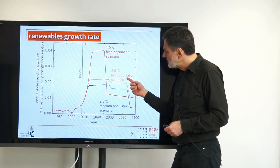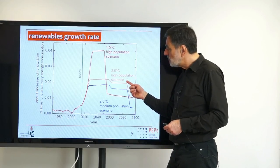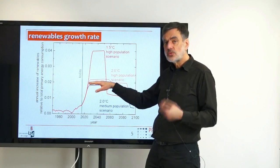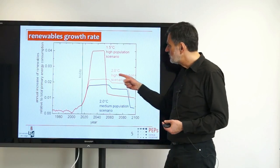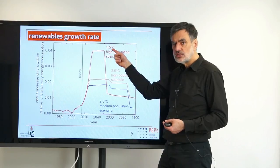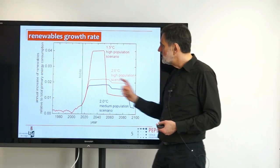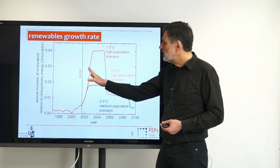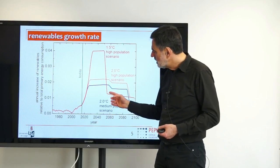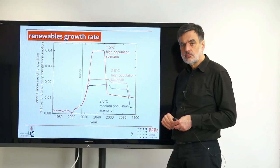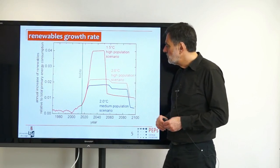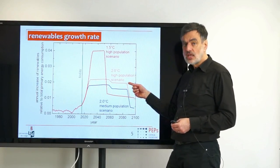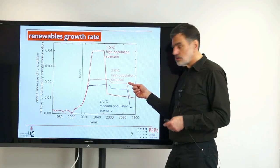If we want to achieve only the 2°C goal with the high population scenario, the required replacement rate decreases to roughly 2% per year — so the effort is significantly less. We have to double our effort to move from the 2°C limit to the 1.5°C limit. On the other hand, for the 1.5°C limit we have to maintain that high level for a shorter period — ending around 2050 — whereas for the 2°C limit, we have to keep up our efforts for something on the order of 60 years.